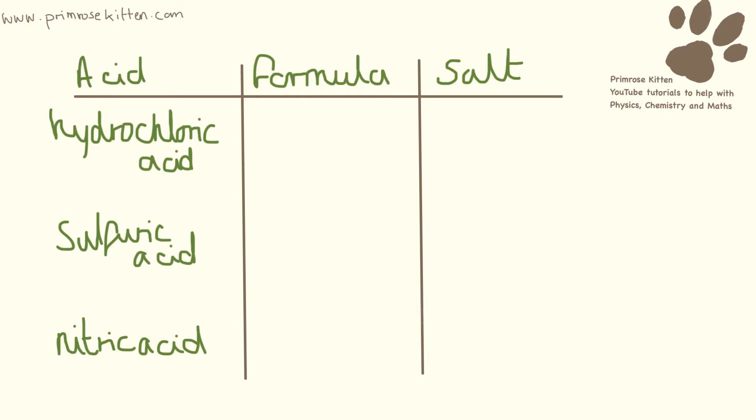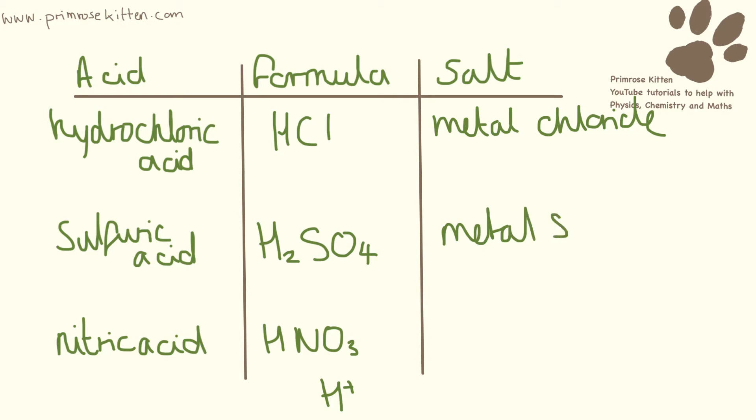Now the common acids you're going to come across are hydrochloric acid, which is HCl, sulfuric acid, H2SO4, and nitric acid, HNO3. And what you should have noticed is that all of these begin with an H, and that's the bit that makes it acidic. The salt that's formed from all of these is going to be, depending on the metal, a metal chloride, metal sulfate, or a metal nitrate.